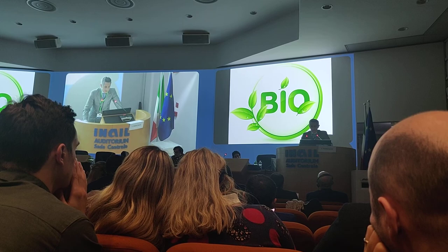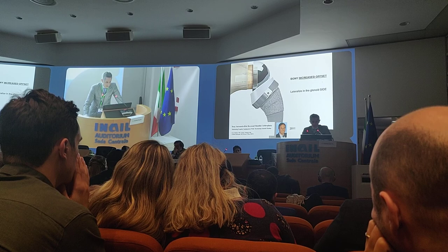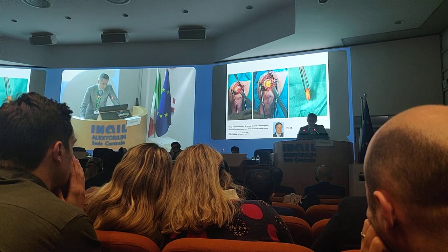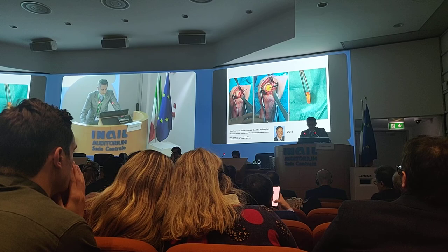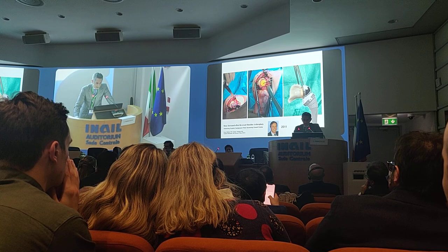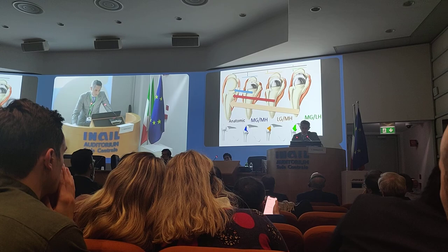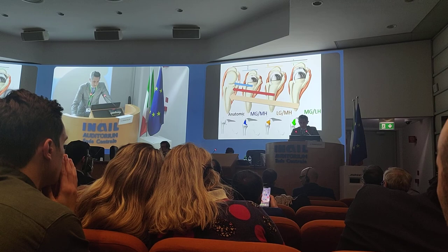Moving on to bio-RSA — there is another approach. Bio-RSA means an increased offset on the glenoid side, lateralizing the offset of the glenoid. It was described by our friend Pascal Barot, and it involves harvesting a cylinder from the center of the humeral head. This cylinder is applied just behind the metal base plate, allowing a lengthening of the glenoid, which is our goal — to avoid notching and to increase the performance of the rotator cuff muscles, which are more lengthened and work better.